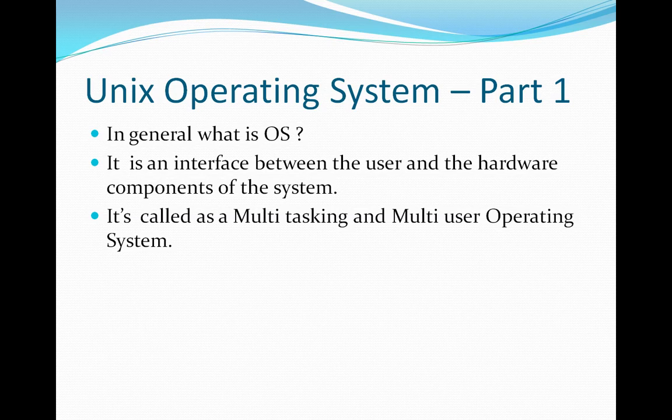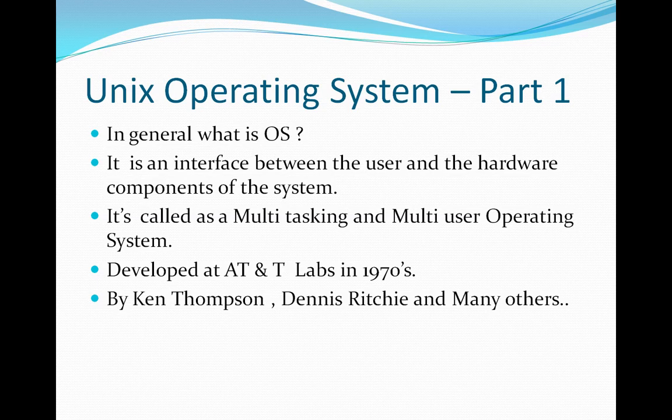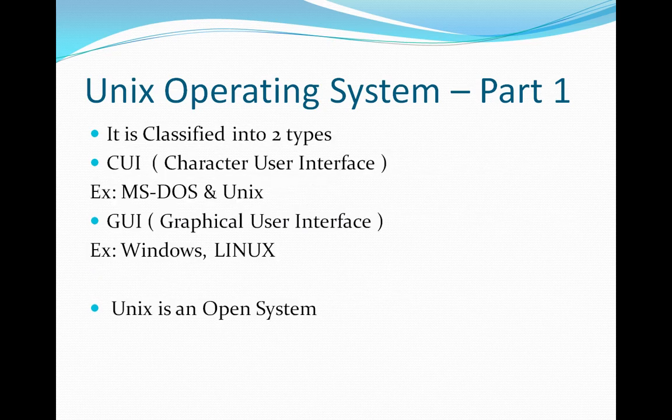Coming to the development of UNIX — who developed it? It was developed at AT&T labs in the 1970s by Ken Thompson, Dennis Ritchie, and many others who were involved in the development of this UNIX operating system. It is also classified into two types.